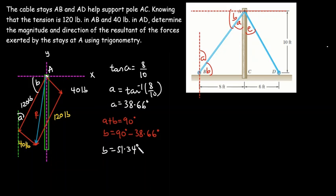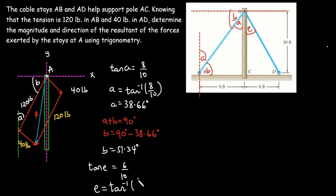Now we need to find angle E. We have tan(E) equal to the opposite side, which is 6, over the adjacent side, which is 10. So angle E equals tan⁻¹(6/10), which gives us a value of 30.96 degrees.